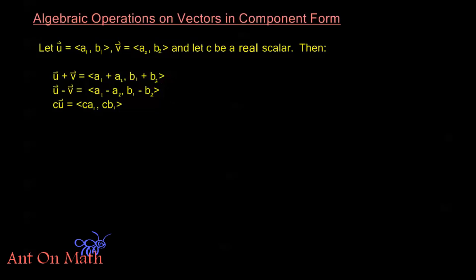So let's say we have these two vectors, u, which is <a1, b1>, and v, which is <a2, b2>, and let's let c be any real number. We'll call that a real scalar. So a scalar is just some real number that we're going to use to multiply to a vector, and we'll see that multiplication here in a moment.